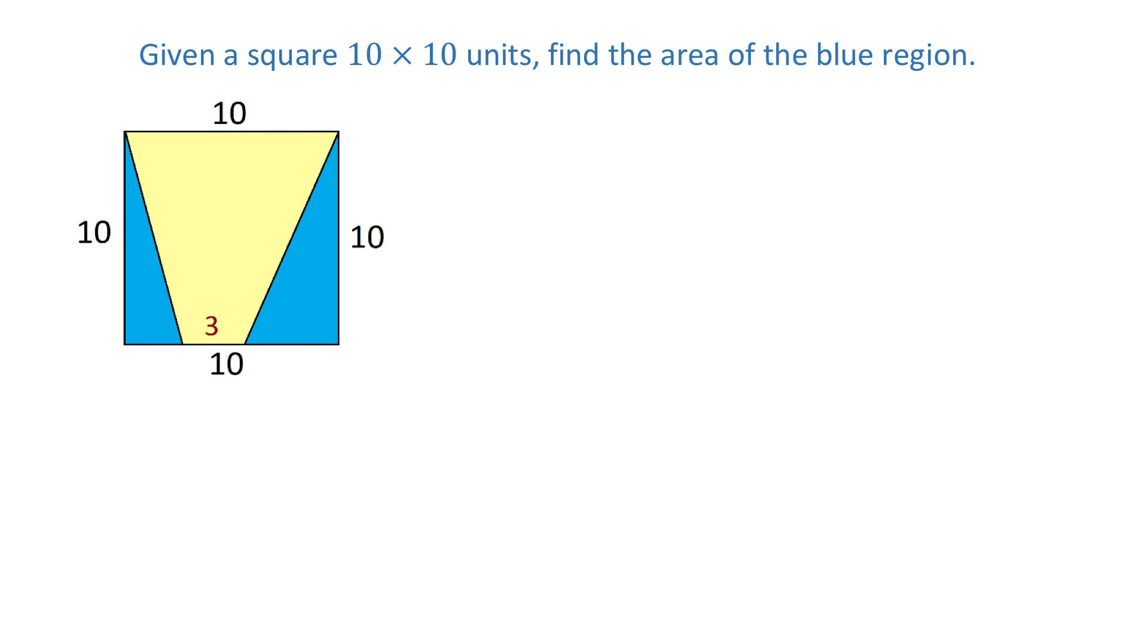This is an easy problem once we notice that the yellow region inside this square is a trapezoid with bases of 10 units and 3 units. If we find the area of the trapezoid and subtract it from the area of the square, we will get the area of the blue region.